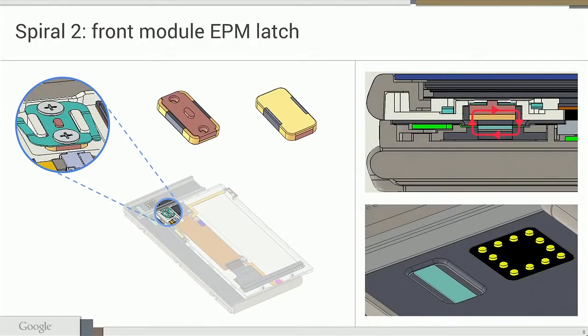This slide shows the front module attach mechanism. In the front there's no spine, so the EPM mechanism used in the back — which is totally without moving parts — can't be used there. Instead, there's a slot in the endo with an EPM in it, and a leaf spring inside the module. That small piece of magnetic material gets pulled down into the endo to firmly latch the module. Front modules need to be very firmly attached because without the spine, they can slide back and forth if not secured.